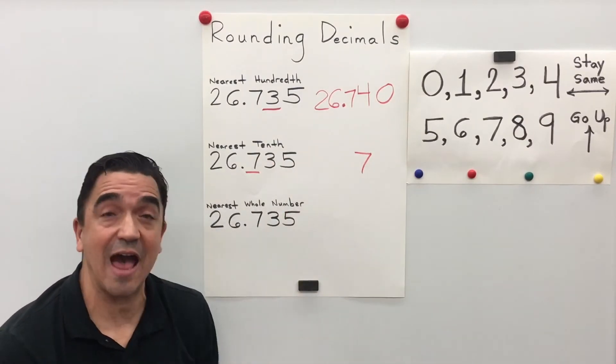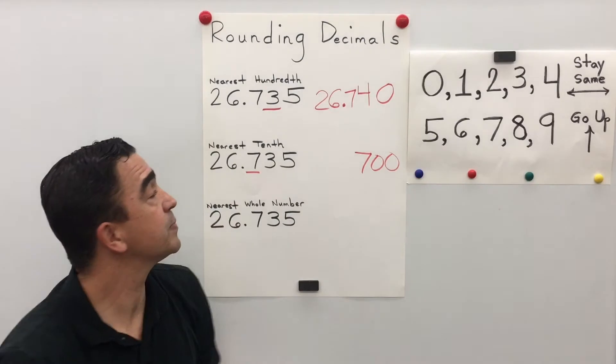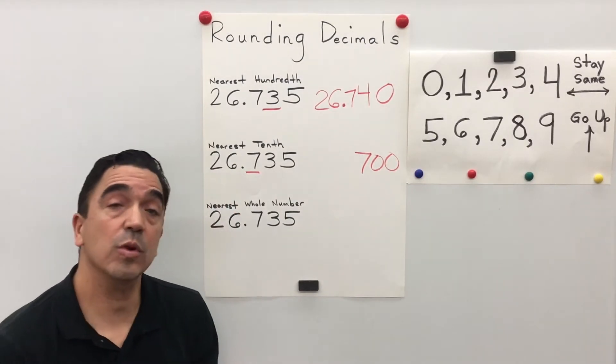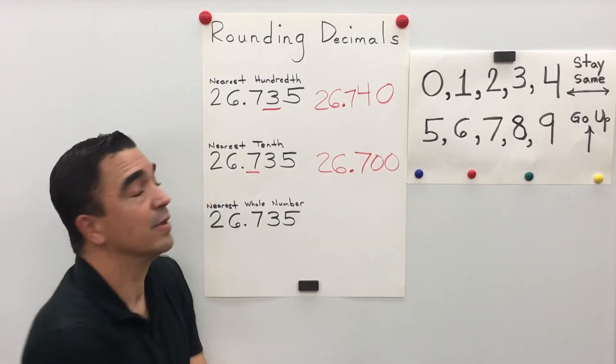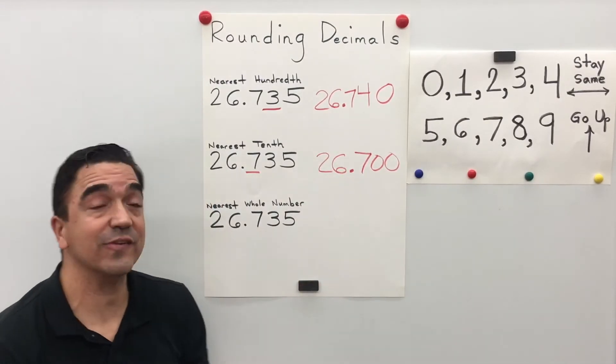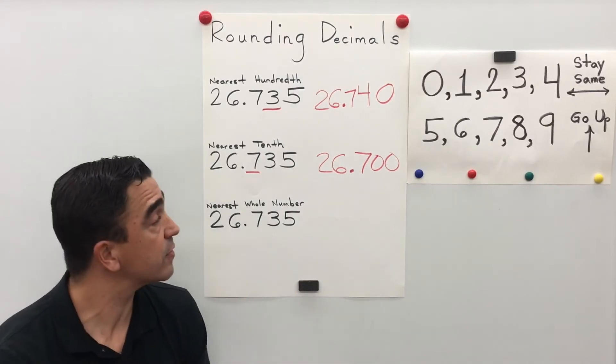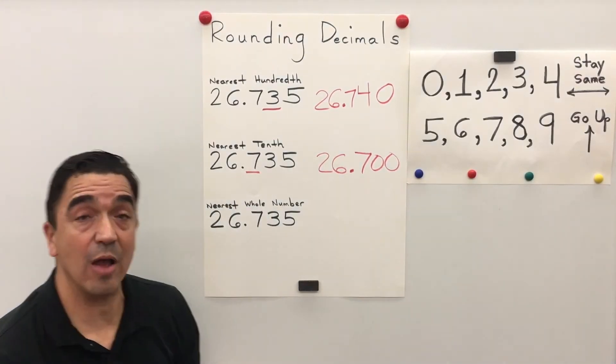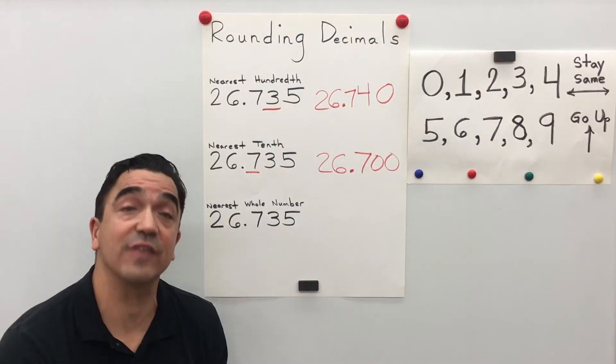All the digits after become zero. So 26 and 735 thousandths rounded to the nearest tenth is 26 and 700 thousandths.